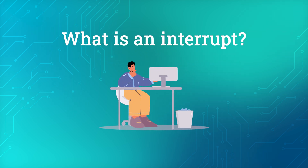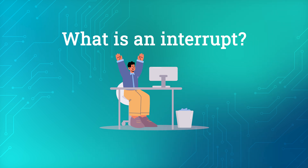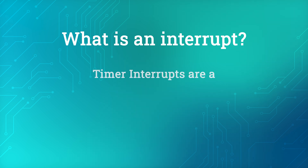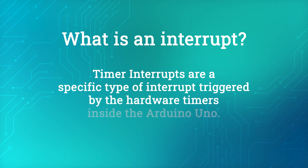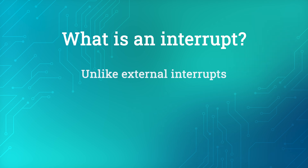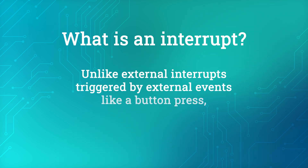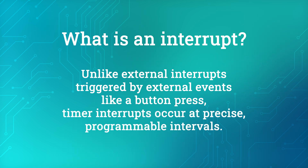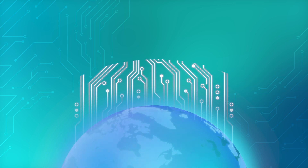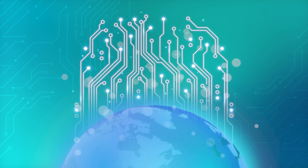First, let's understand what an interrupt is. An interrupt is a signal that temporarily holds the processor's current task to execute a separate routine. Once the routine is completed, the processor resumes its previous task. Timer interrupts are a specific type of interrupt triggered by the hardware timers inside the Arduino Uno. Unlike external interrupts triggered by external events like a button press, timer interrupts occur at precise, programmable intervals. This opens up a world of possibilities for non-blocking code execution.